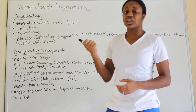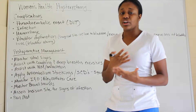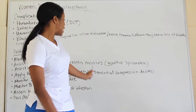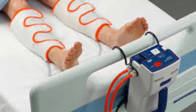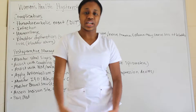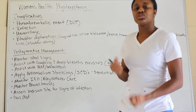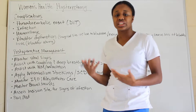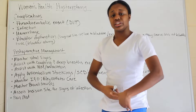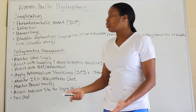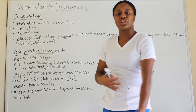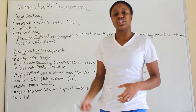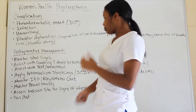Apply anti-embolism stockings, though what's more commonly used now are SCDs — sequential compression devices — which strap around the patient's calf and are hooked to a machine that squeezes one leg at a time in rotation. This helps with circulation while the patient is on bed rest, since blood can pool and the patient is prone to DVT. The squeezing pushes circulation upward.